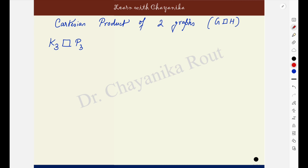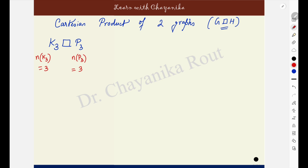How to find out the Cartesian product of two graphs? This is the notation that we use for Cartesian product. Suppose we need to find out the Cartesian product of K3 with P3. First of all, what you will do is note down the order of the two graphs. The order of K3 is 3 and the order of P3 is also 3.